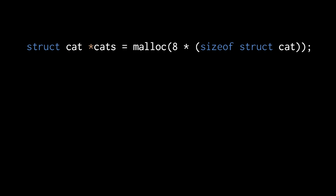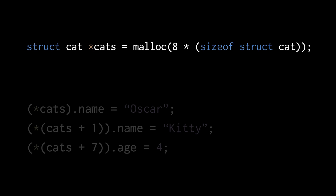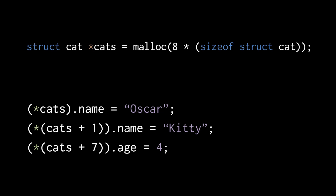Here we use malloc to allocate a block the size of eight struct cats, and assign the result to a struct cat pointer. We can then retrieve individual cats using pointer arithmetic and the dereference operator, and once we have an individual cat instance, we can assign its members with the dot operator. So here we assign the string "oscar" to the name member of the first cat, "kitty" to the name member of the second cat, and the number four to the age member of the last cat.